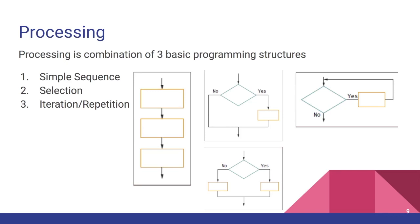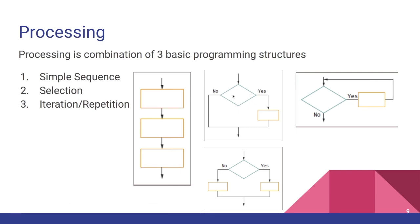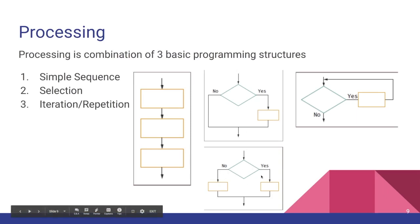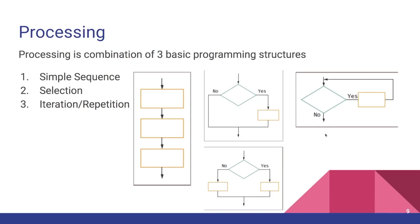When it comes to processing, once you've got your input down, processing comes down to three basic programming structures. You can do simple sequence, where you execute programming instruction after instruction. You can use a selection structure where you ask a yes-no question, and based on the answer you do something — a one-way selection if you only act on yes, or a two-way selection if you do something different for each answer. You also have iteration or repetition, where you ask a yes-no question, do something if the answer is yes, then return back to the question to ask it again. Hopefully at some point the answer becomes no and you exit what we call the looping structure; otherwise you get stuck in what we know as an infinite loop.